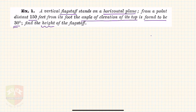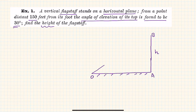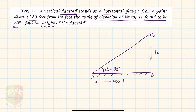Let point O be the observer's position and point A be the foot of the flagstaff. AB represents the height h of the flagstaff, and OA represents the horizontal ground of 150 feet. Join OB. The angle of elevation of the top B is 30 degrees, so alpha equals 30 degrees. We need to find h.